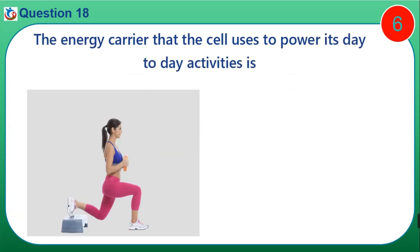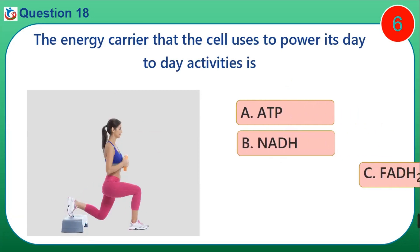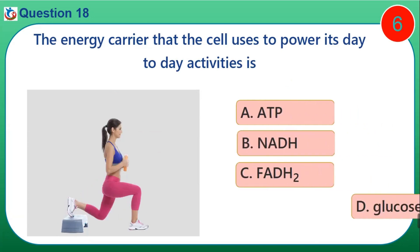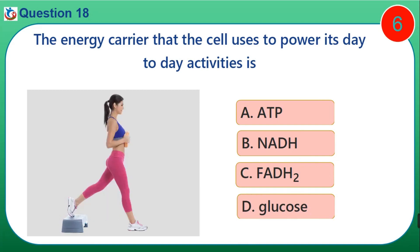Question 18. The energy carrier that the cell uses to power its day-to-day activities is dash. A. ATP. B. NADH. C. FADH2. D. Glucose.